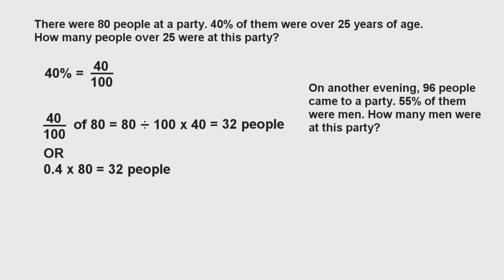Now let's look at another example. On another evening, 96 people came to a party and 55% of them were men. How many men were at this party? The total is 96. So we find 55 over 100 times 96, just like in the previous example. That gives us 52.8. Since we can't have 52.8 people, we round to the nearest whole number: 53 people.